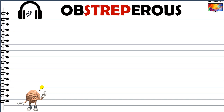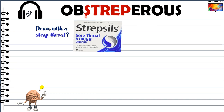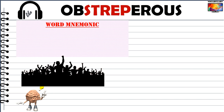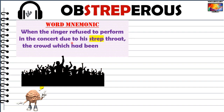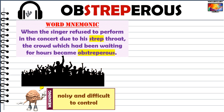Let's make a memory clue around that. Another hint is the word strep, which is very prominent in abstreperous. Have you ever had a strep throat, a sore throat? Consider the following example sentence: when the singer refused to perform in the concert due to his strep throat, the crowd which had been waiting for hours became abstreperous. The meaning of abstreperous is clear from this sentence — the word means noisy and difficult to control.